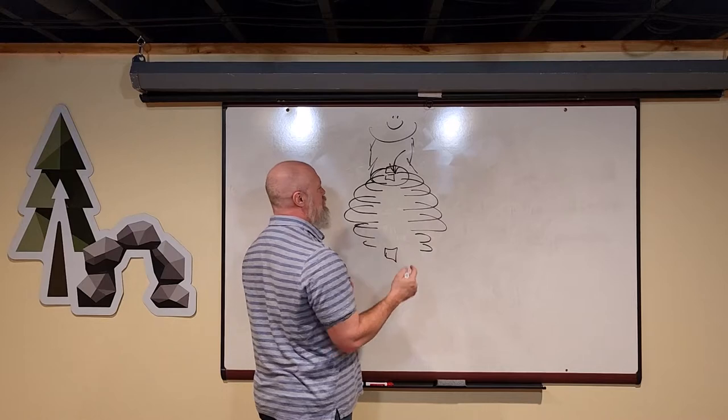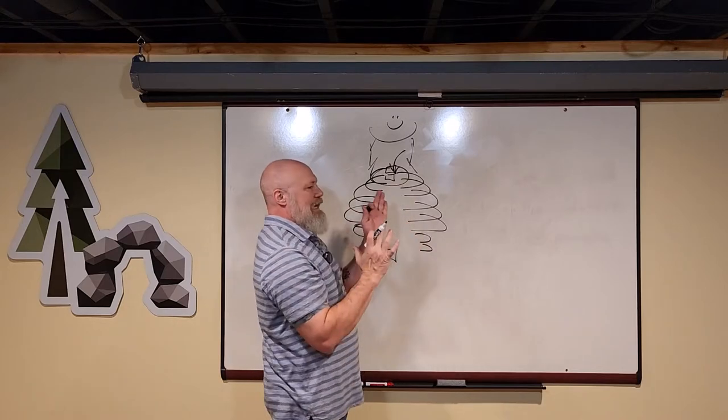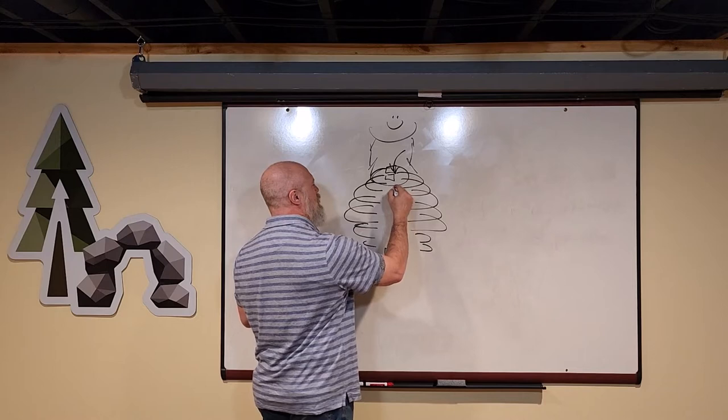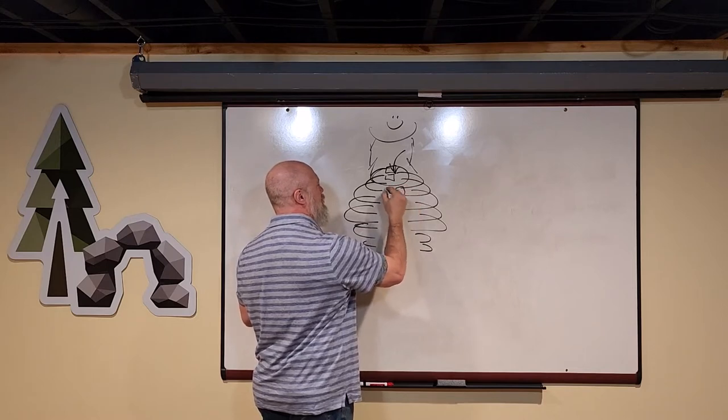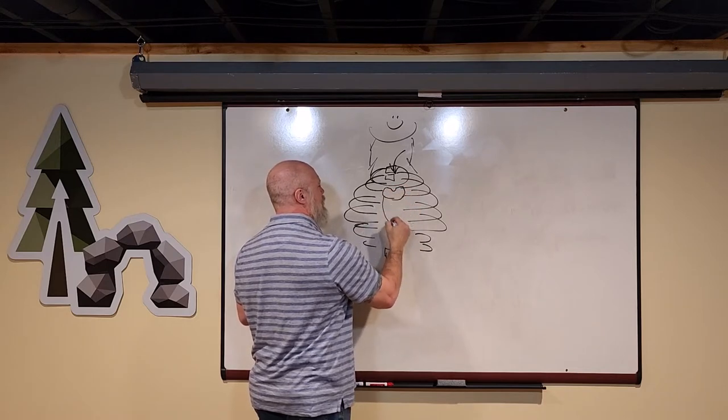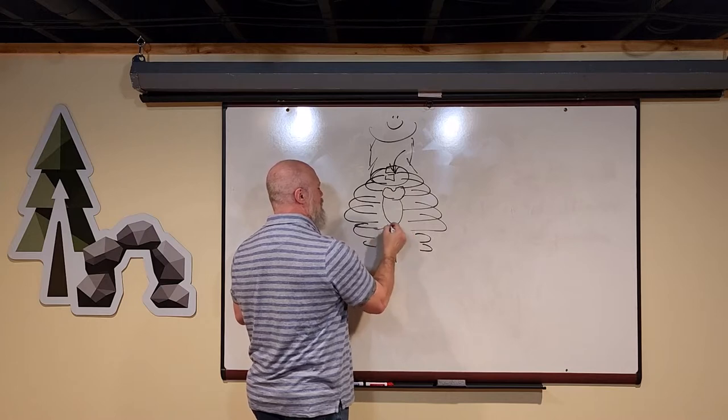T2 thoracic vertebra has T2 right and left costal elements, which are the ribs. And we'll do a little detail of those in a minute. In the anterior aspect of your thorax, you're going to have a large bone called your sternum. And your sternum is actually made of three parts.